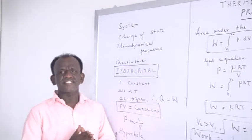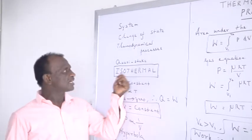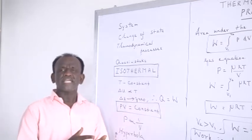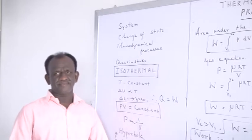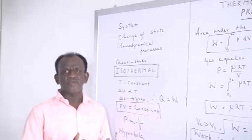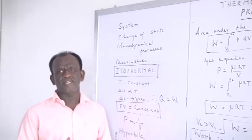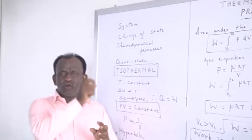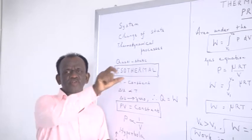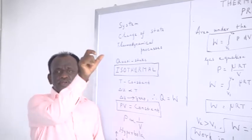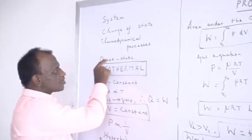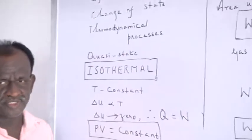If the temperature is kept constant, then the process is called an isothermal process. But the process should be carried out in a slow manner because we can apply the equation of state only for thermodynamical equilibrium. As the system goes from the initial state to a final state, the process should be carried out in a very slow way. That slow process is called a quasi-static process.